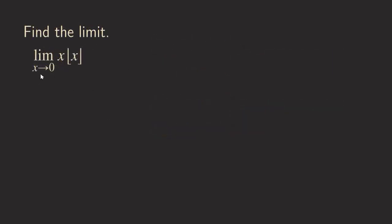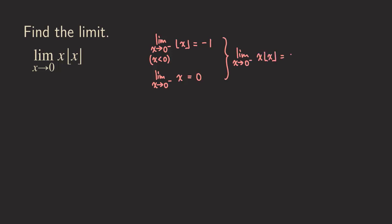One more limit problem — we let x approach 0. As x approaches 0 from the left, x is less than 0. The largest integer less than something approaching 0 from below is negative 1. The limit of x as x approaches 0 is just 0. Putting those together, the left-side limit of x times the floor of x is 0 times negative 1, which equals 0.